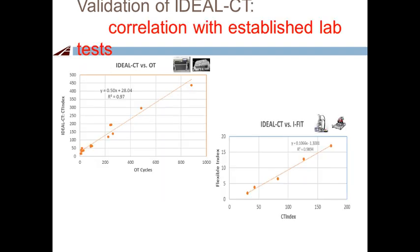In the upper left, the Ideal-CT versus overlay tester comparison shows very good correlation across 17 mixes, with CT Index on the y-axis and OT cycles on the x-axis. We also have correlation with TxDOT's new crack propagation rate parameter. The lower right shows Ideal-CT versus IFIT (Illinois Flexibility Index) with five data points — also very good correlation. NCAT's Adam Taylor independently showed very good correlation among IFIT, Ideal-CT, and OT, with R² values of 0.98 for Ideal-CT vs. OT Texas and 0.9 for IFIT vs. Ideal-CT.